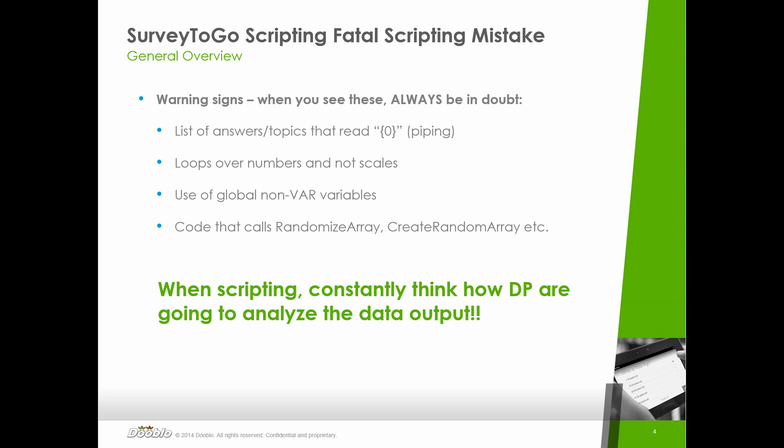Next up: if you see someone looping over a number of times instead of a scale, watch out. Usually loops are done over scales. If somebody is looping over numbered items and not scales, that might mean that person is piping something later on to the loop, and you won't know what that something was if it was randomized and not saved. Loops over numbers instead of scales are a very big warning sign for this issue — it can be perfectly fine, but be warned.